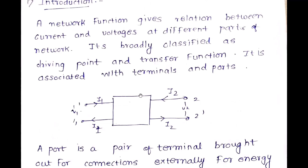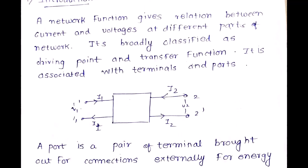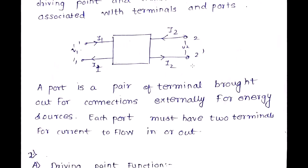I1 enters into the network and I1 itself comes out. Similarly, when I2 enters the network, I2 itself comes out. This is a two-port network with a network in the middle and voltages and currents V1, I1 and V2, I2 at port 1 and port 2 respectively. There are two important functions: the driving point function and the transfer function.